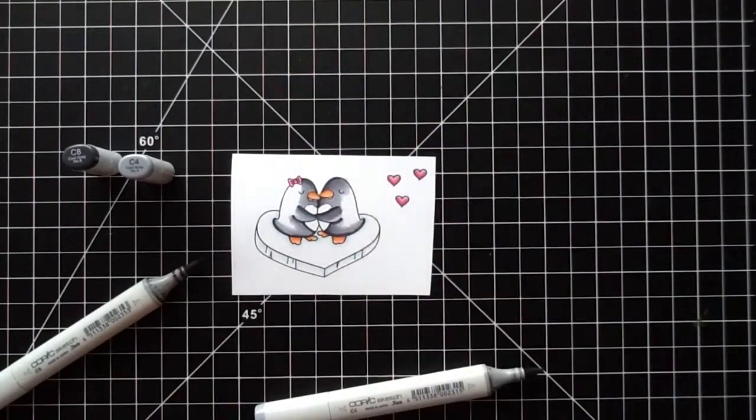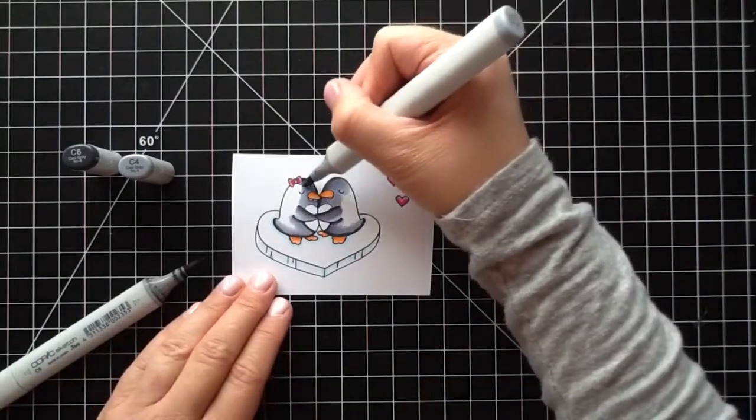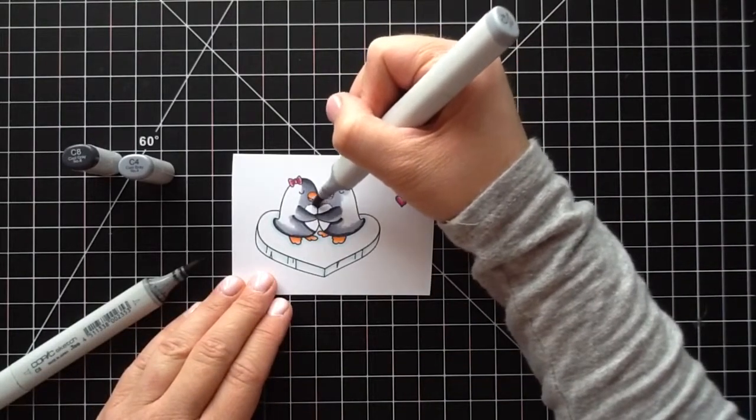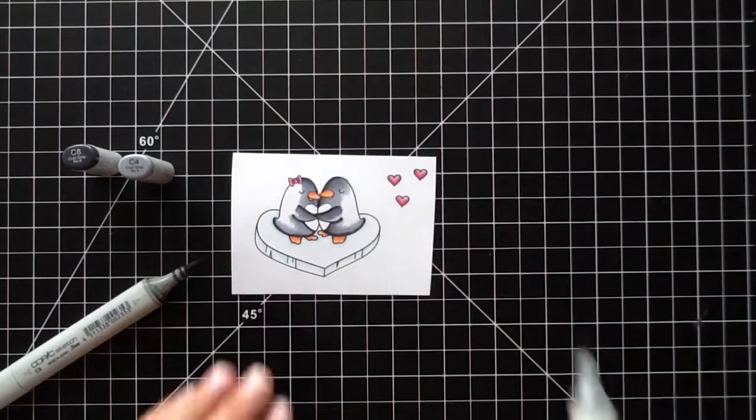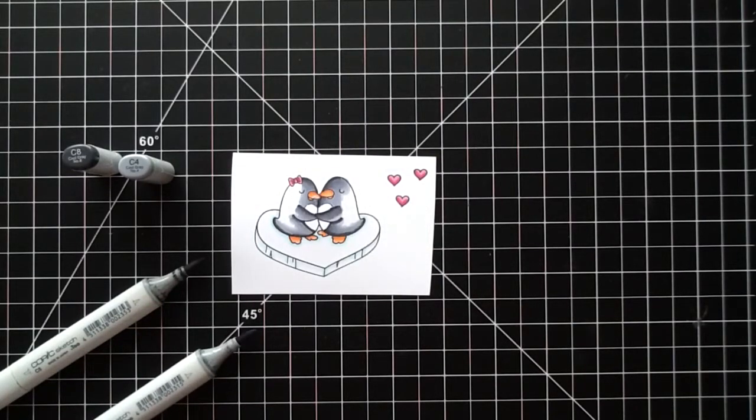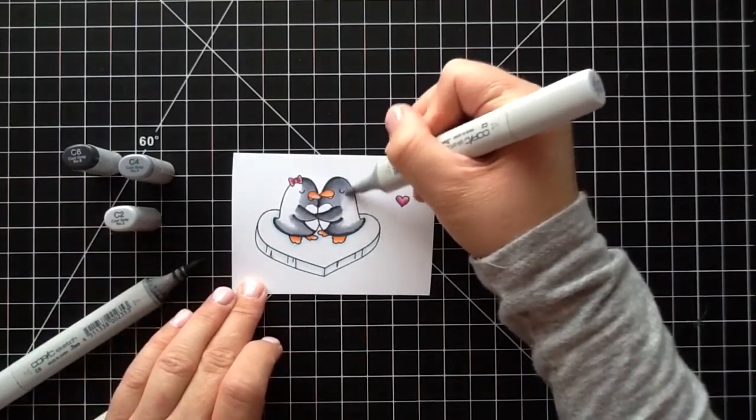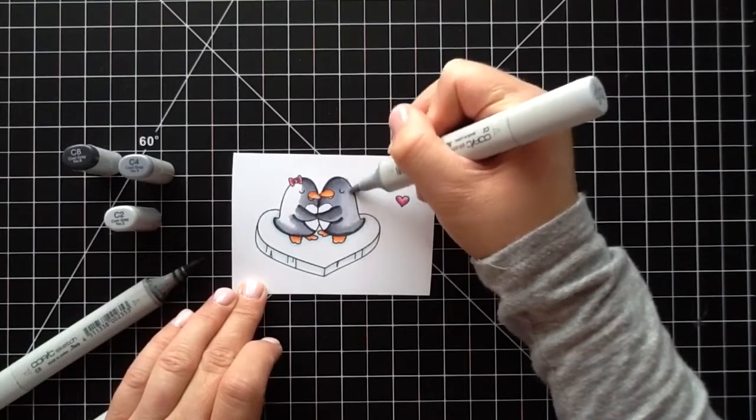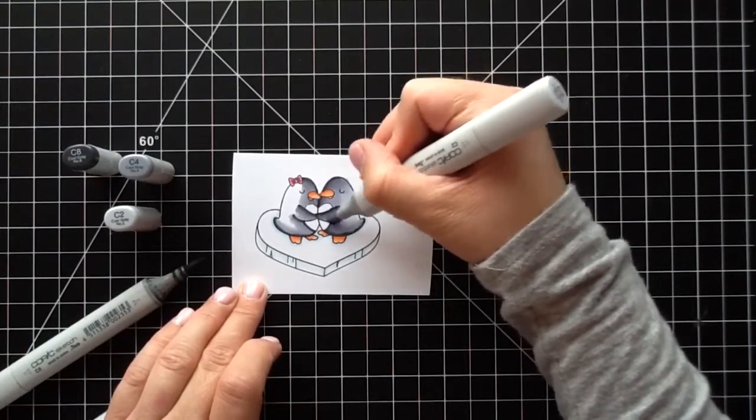I'm just kind of playing around with it and going back and forth to give it the shading that I wanted. I got a little bit on the beak there, so I just used my blender C00 and erased that part. Now I'm taking in the C2 and I'm going to blend that all out. I love the color how it worked out.